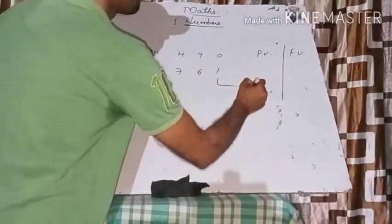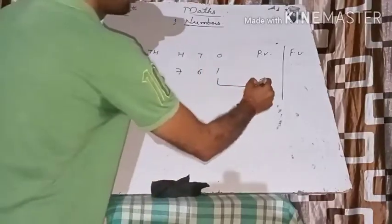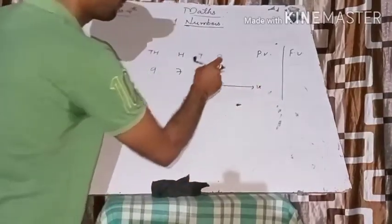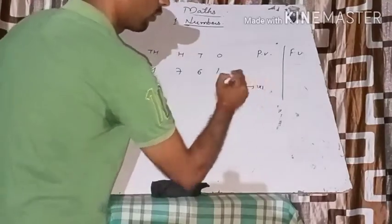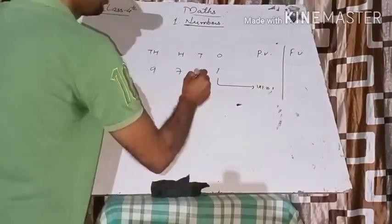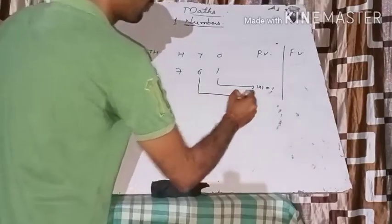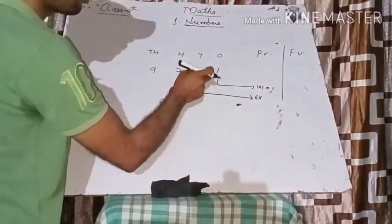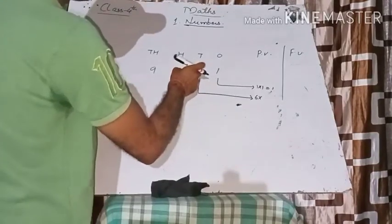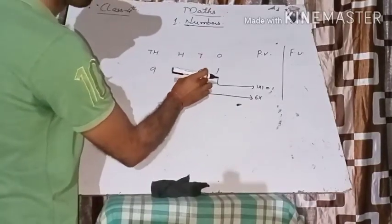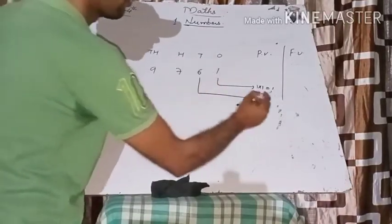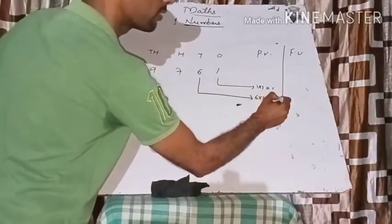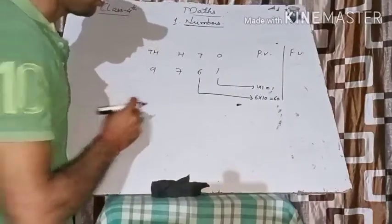For example, the place value of 1 — the digit is 1 and the place is ones, so 1 × 1 = 1. The place value of 6 — the digit is 6 and the position is tens, so 6 × 10 = 60. Are you getting my point?